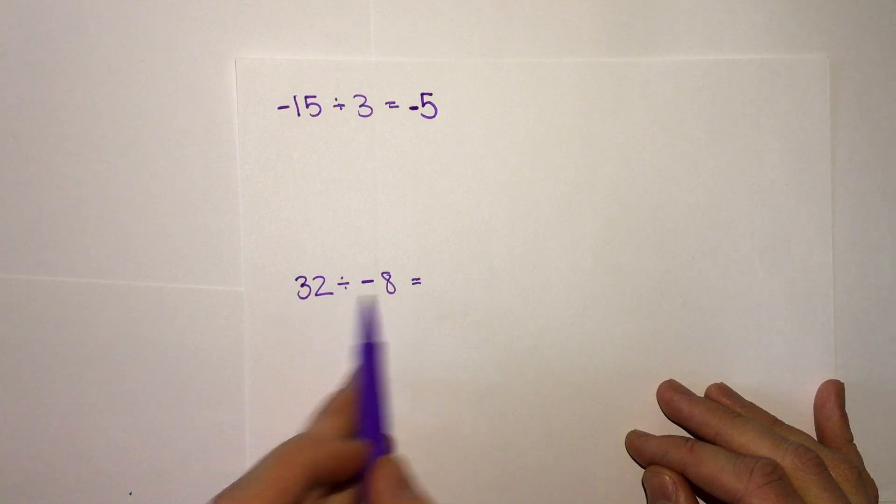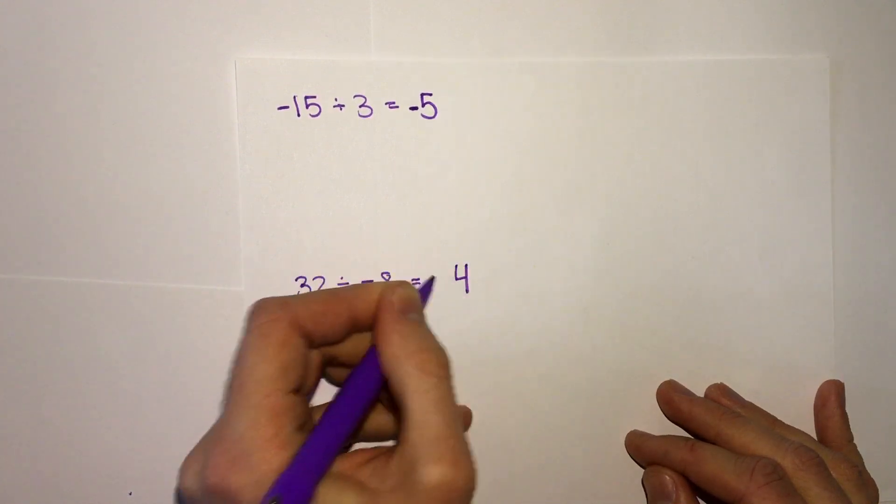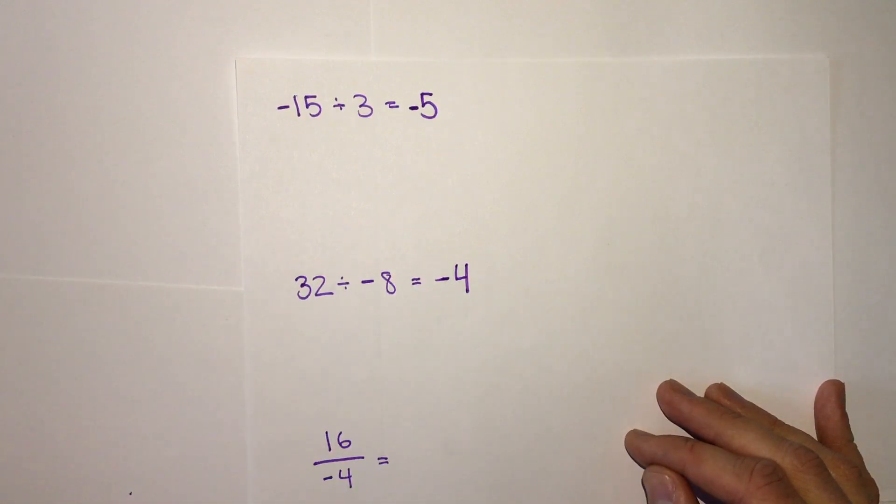32 divided by negative 8, we only have one negative. 32 divided by 8 is 4, and one negative tells us a negative answer.